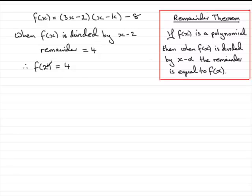So all we need to do is substitute x as 2. If we do that, we've essentially got, for the first bracket—I'll put it in square brackets—we've got 3 times 2 minus 2, that's that bracket.